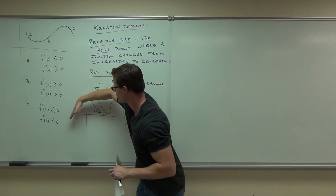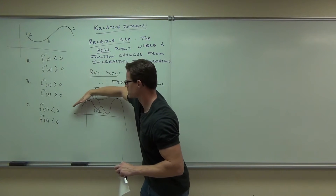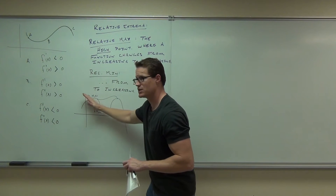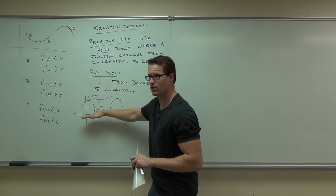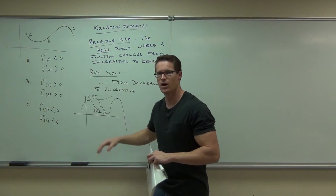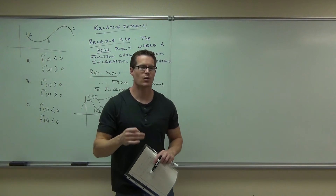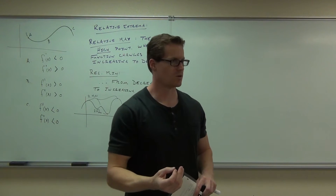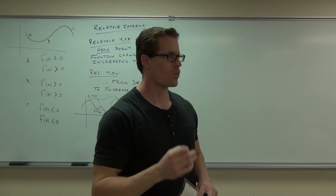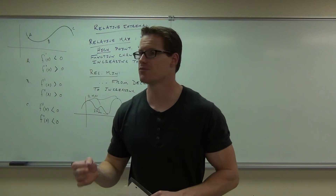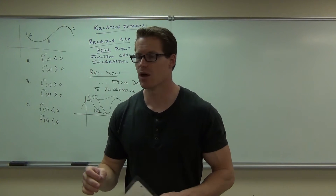Looking at the slope at those points: positive increasing, zero, negative decreasing, zero, increasing, zero, decreasing, zero. So everywhere where we get a slope of zero, we're going to have a possible relative max or relative min.